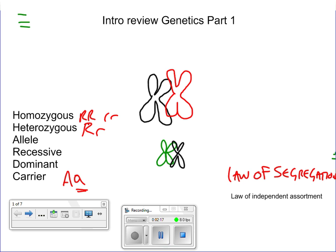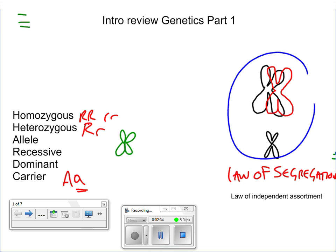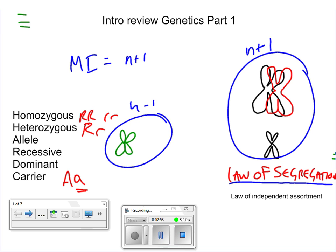Now if the law of segregation is violated and we have one chromosome going one way and this chromosome ends up going the same way, we're going to have the wrong amount of chromosomes in the gametes. This gamete will end up having three chromosomes instead of two. So this would be an N plus one gamete, and this one will be N minus one.